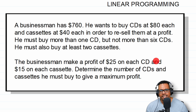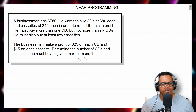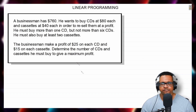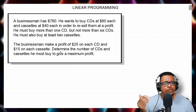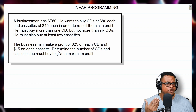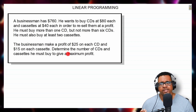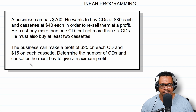From the statement, we could form our function for our profit, which we can maximize or minimize. The question wants us to determine the number of CDs and cassettes he must buy to give a maximum profit, so we want to maximize the profit function. Now let's list out the constraints, which would be inequalities. Before we do that, we need to know what our variables are. The best way to determine the variables is to look at the question and see what they're asking — the number of CDs and the number of cassettes.